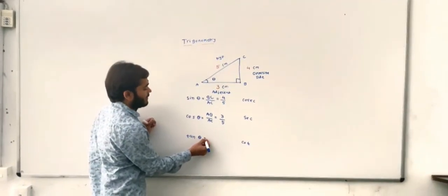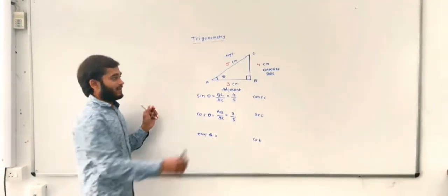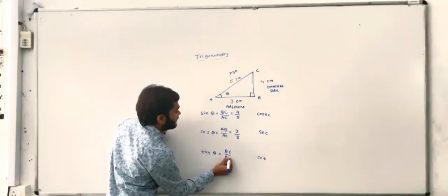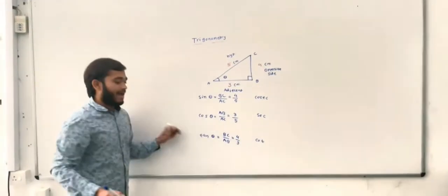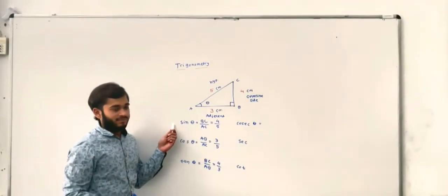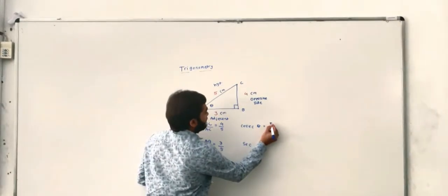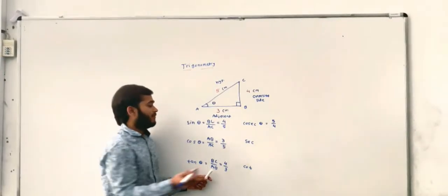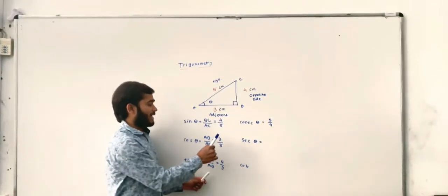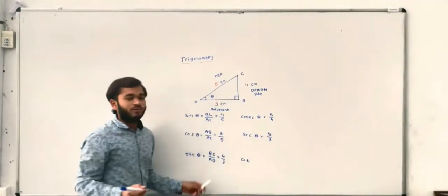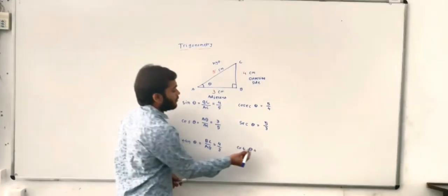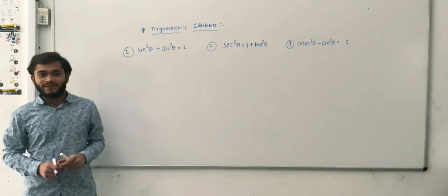If we write tan theta, that means opposite side upon adjacent side. The opposite side is BC and the adjacent side is AB, so tan theta equals 4 by 3. The cosec theta value is opposite to sin theta — sin theta is 4 by 5, so cosec theta is 5 by 4. The sec theta value is opposite to cos theta — cos theta is 3 by 5, so sec theta is 5 by 3. And cot theta is the opposite of tan theta — tan theta is 4 by 3, so cot theta is 3 by 4.